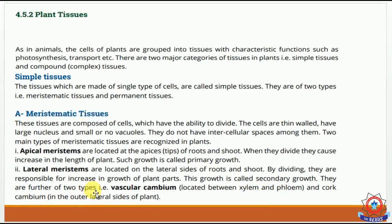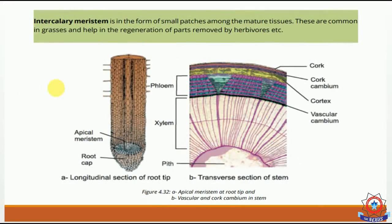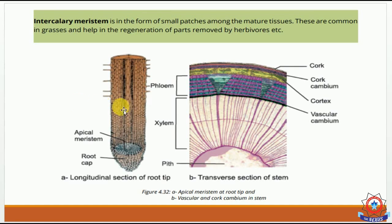Lateral meristem is further of two types: vascular cambium and cork cambium. Vascular cambium is found between xylem and phloem, and cork cambium is found on the outer lateral side of the plant.